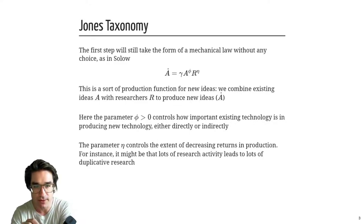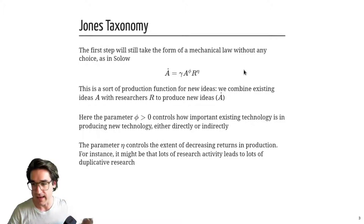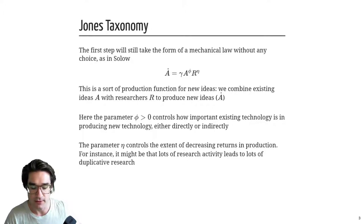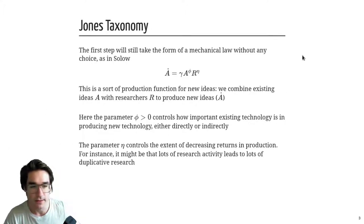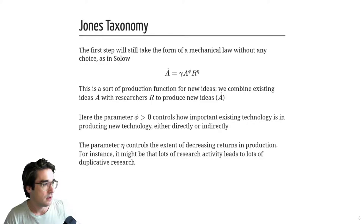The φ (phi) and η (eta) are the two exponents controlling how important each of those inputs A and R are. A side note: in the graduate lecture this morning there was a question about zooming over the equation — I can zoom the whole thing. Let me figure out how to do that in my streaming setup.